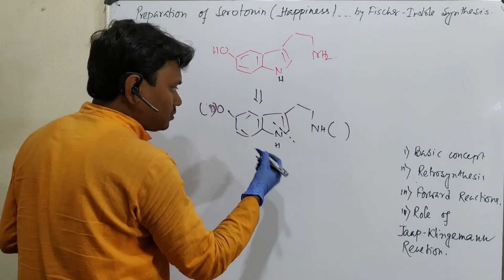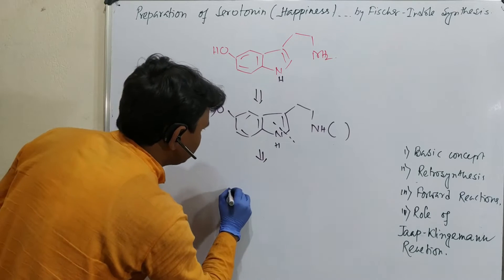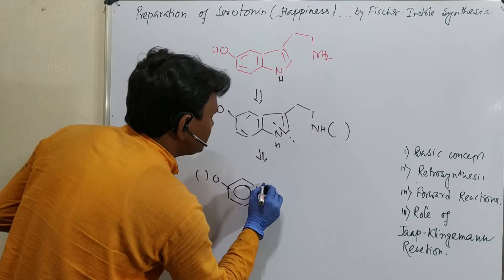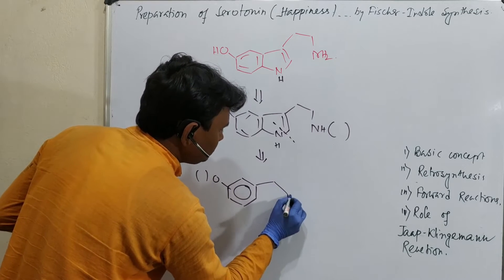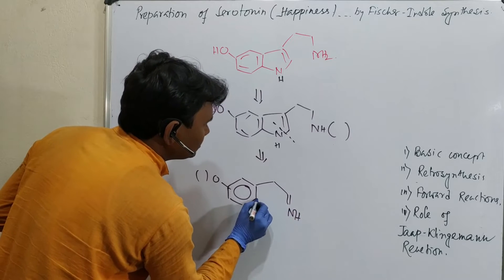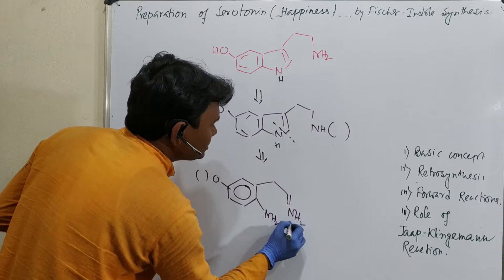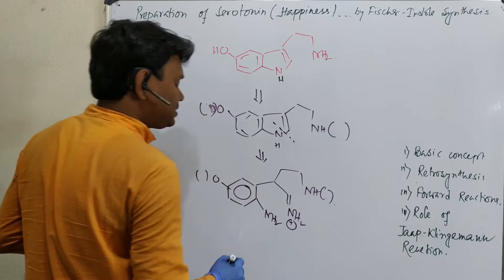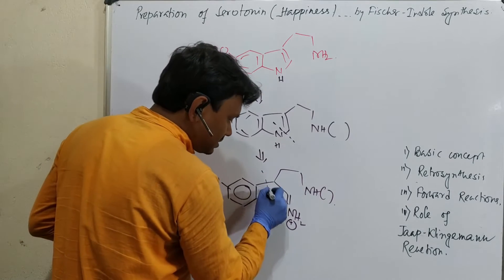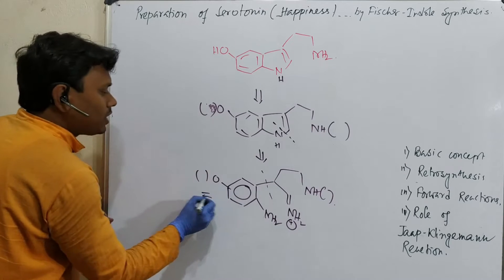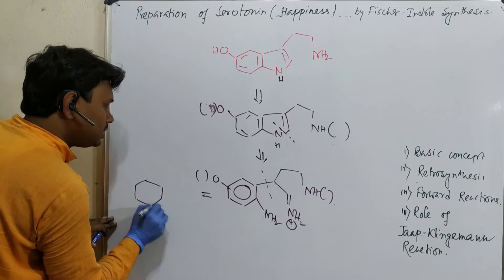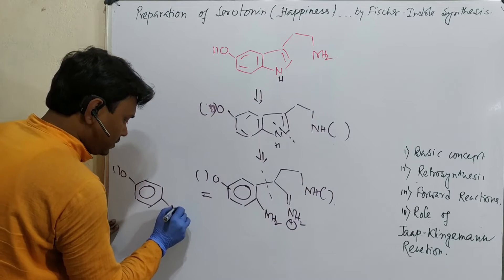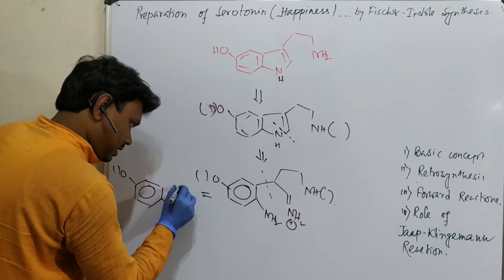Because of the 3,3 sigmatropic shift, what do we need? We need this — this is NH2, plus this. So for the next step, because of the 3,3 sigma-tropic shift, we need a hydrazine derivative — NH, NH.